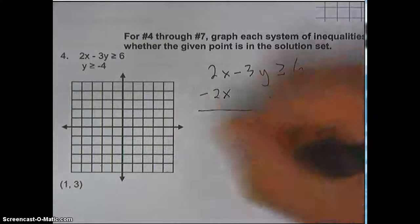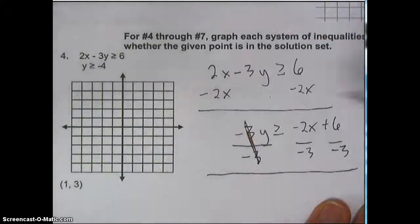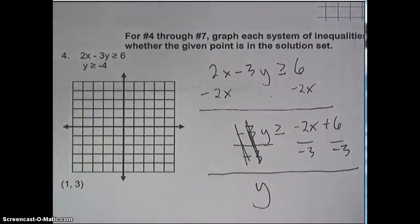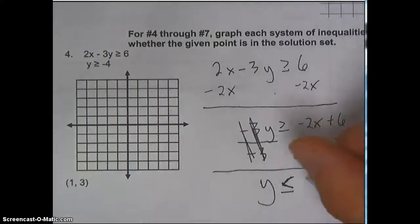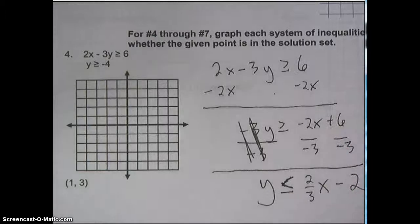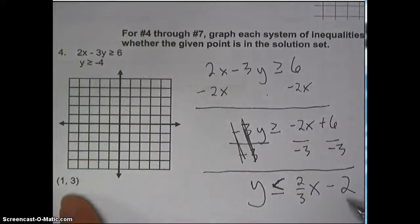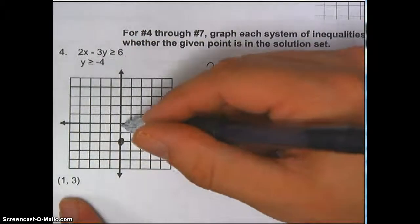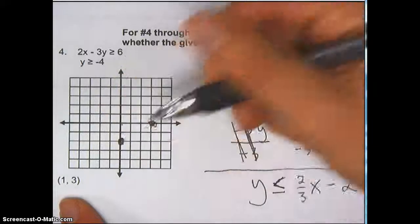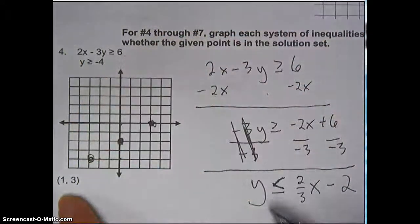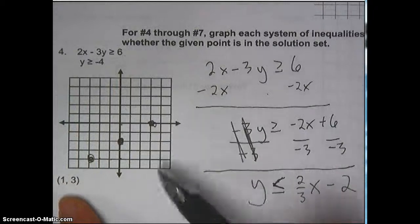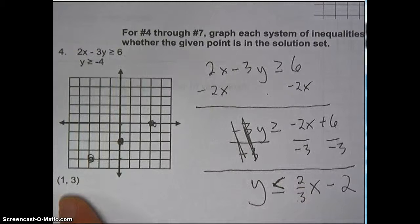Anytime you multiply or divide by a negative, flip the inequality. So now it says y is less than or equal to 2/3x minus 2. I can graph that — start with the y-intercept of negative 2, then go up 2 over 3. The slope is positive, so it slopes upward from left to right. And this is going to be a solid line because it's got the equal to sign there.